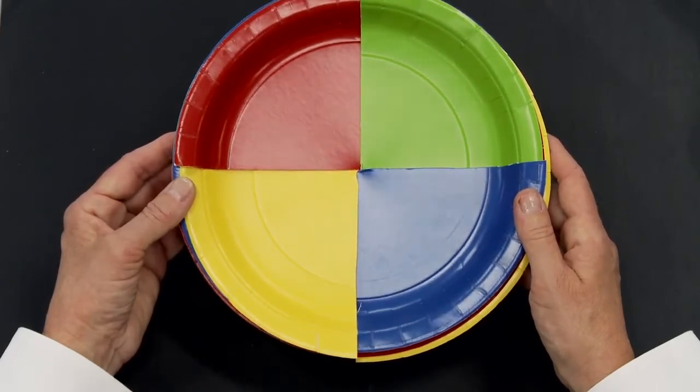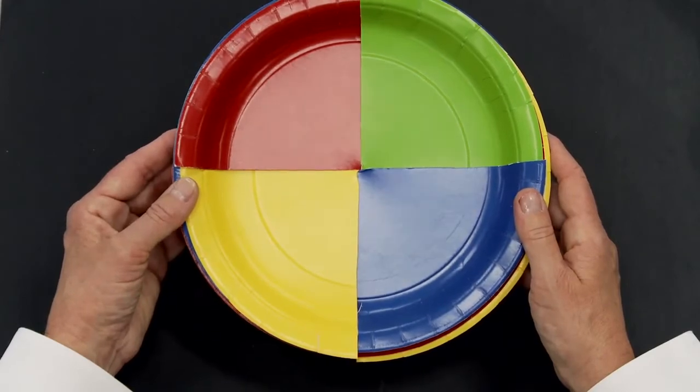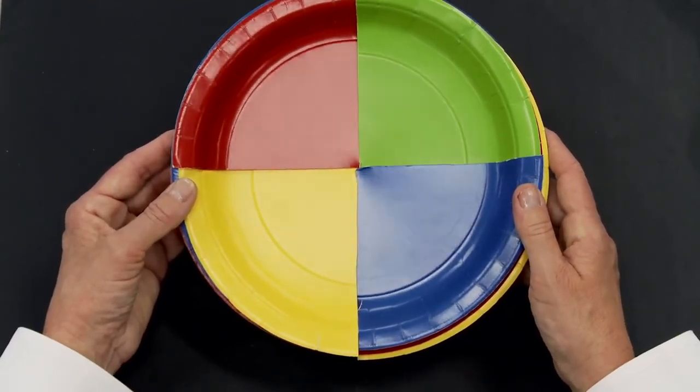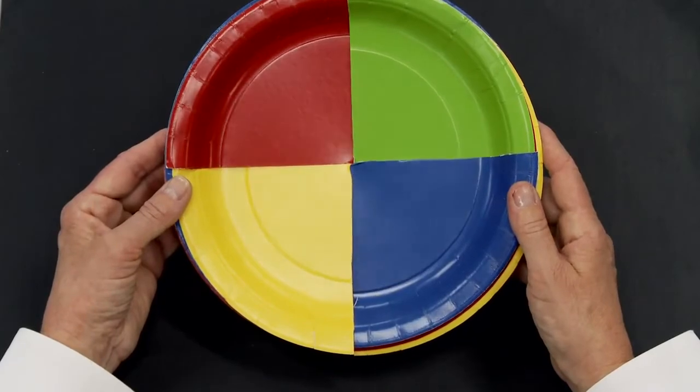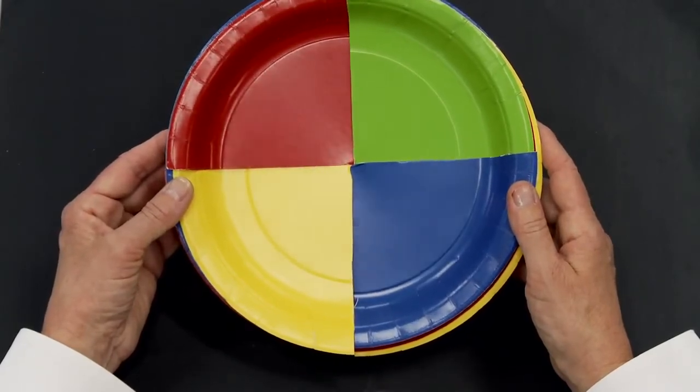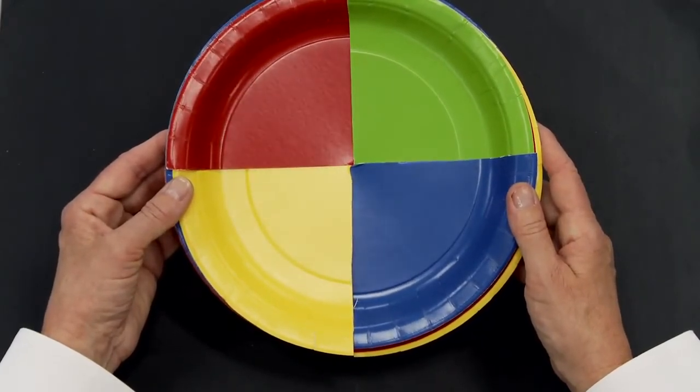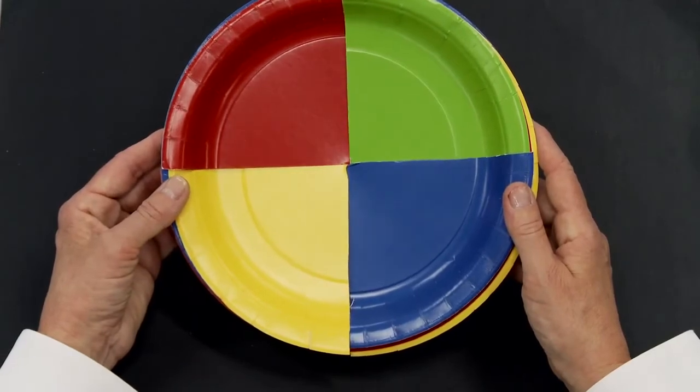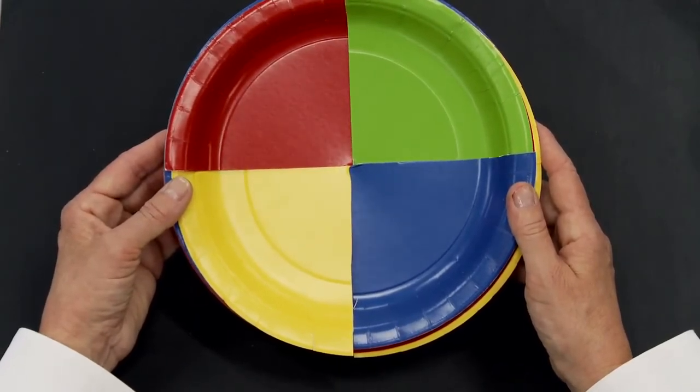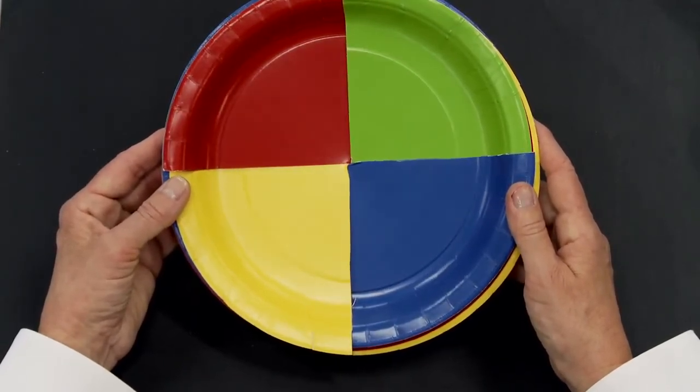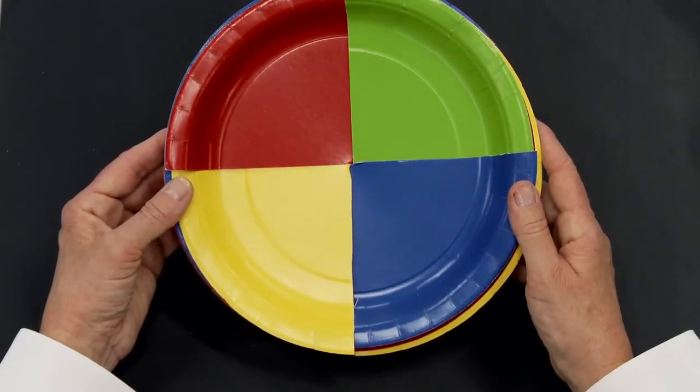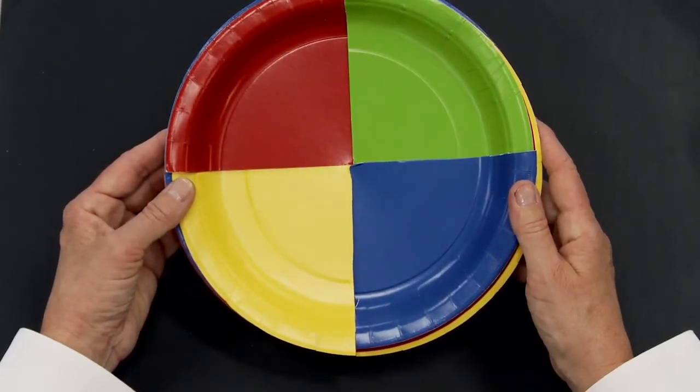These plates are a student favorite and you will so enjoy using these with students. It's a great way to do a show me activity. So show me one fourth red, one fourth green, one fourth blue, and one fourth yellow. How many of the parts are not blue? Oh, Ms. Sutton, I see three-fourths. So again, they're talking fractions and that's the intent of the activity.